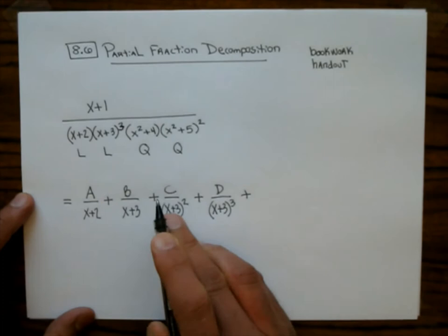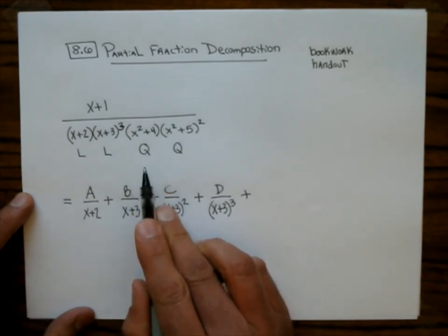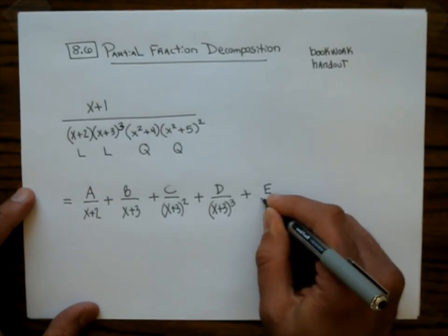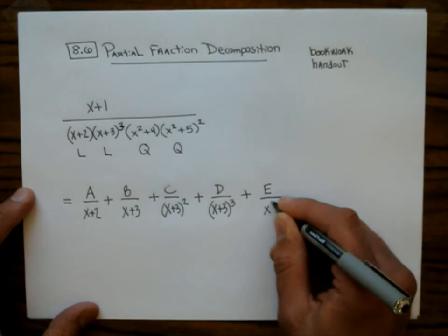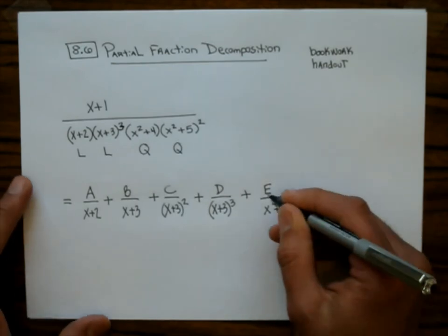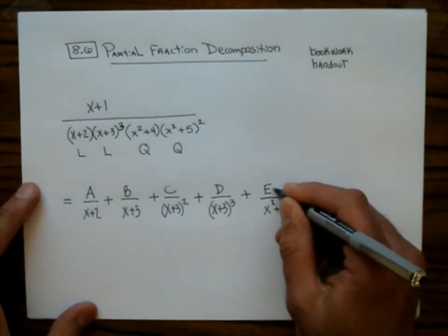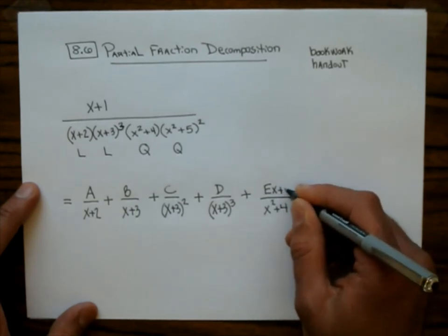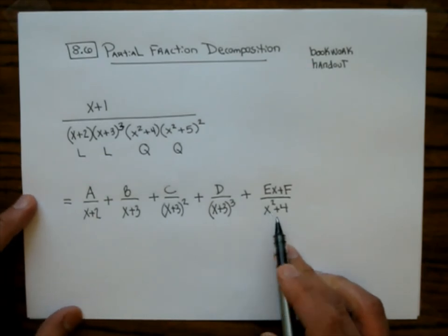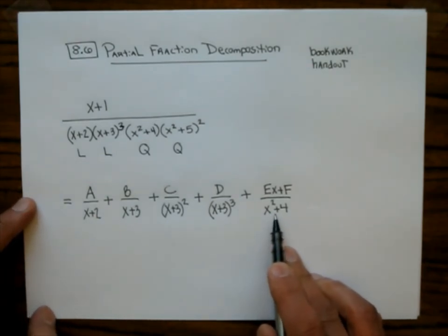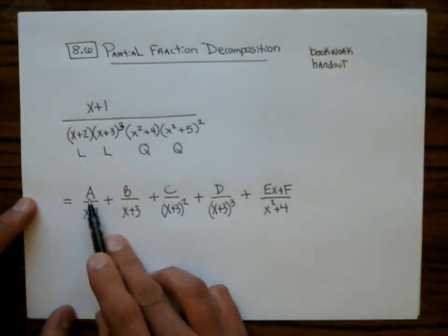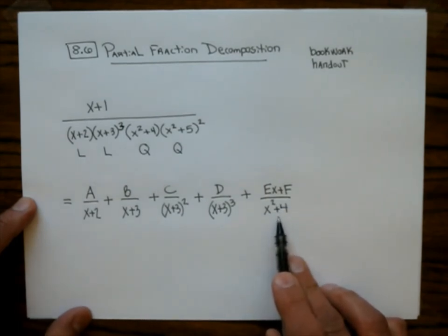Now for a quadratic factor, you might think we're just going to go like E over the quadratic factor, but that's not going to be the case. What you really need — and this is just the rules — is E·x plus F on the numerator. So you have to know your alphabet to do this. When you have a quadratic factor, you have to put a degree-one polynomial on top, whereas for a linear factor you put a degree-zero on top. That's how you take care of quadratic factors.